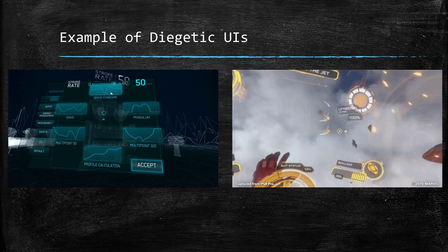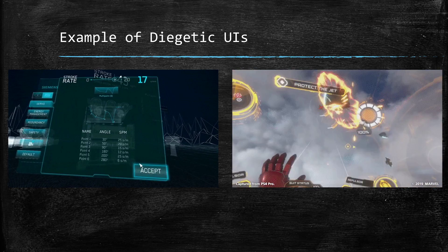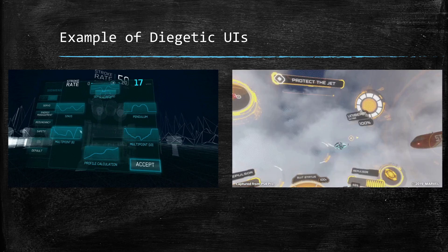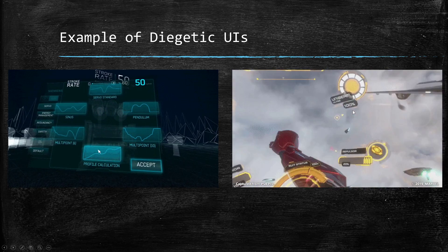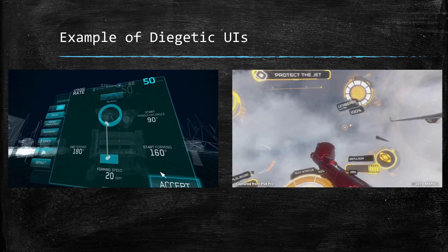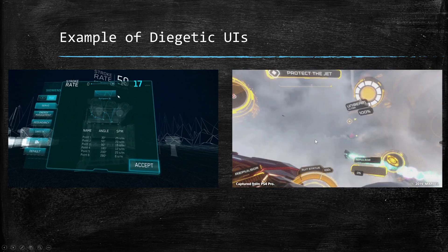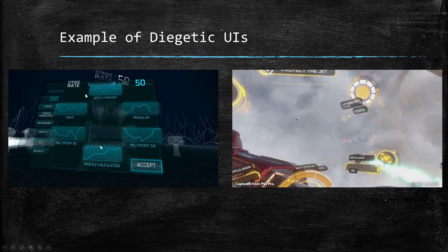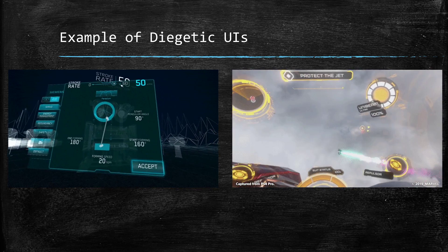In VR games, since you're playing as the character inside the virtual environment, most of the UI is diegetic. For example, in an Iron Man game, you're inside the helmet and you can see all the HUD elements on your helmet display. Likewise, other VR games have pop-ups and interactive elements you can interact with. These are all examples of diegetic UIs.